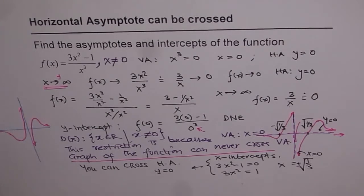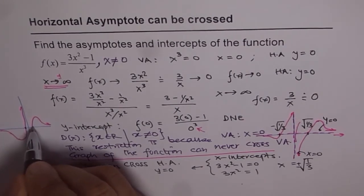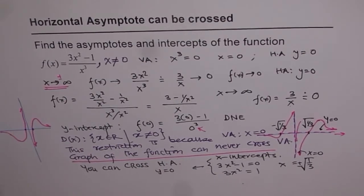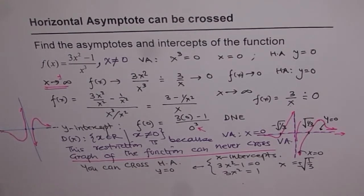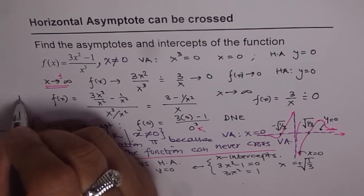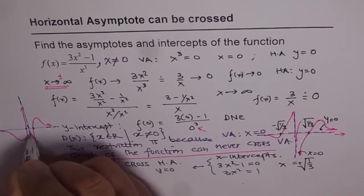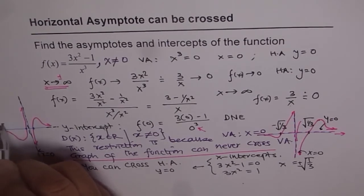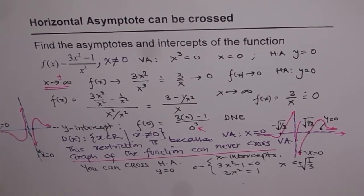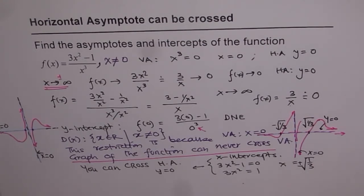These points are your x-intercepts. You can clearly see that the horizontal asymptote is crossed at two points for this particular function, while the vertical asymptote at x = 0 is never crossed. Vertical asymptotes restrict your domain, horizontal asymptotes can be crossed. Remember: horizontal asymptotes can be crossed, but not the vertical asymptotes, since those values of x are not in the domain of the function. I hope that is absolutely clear. Thank you and all the best.